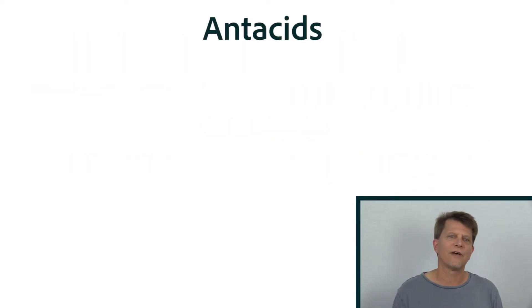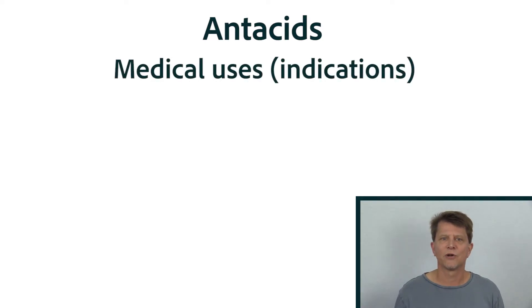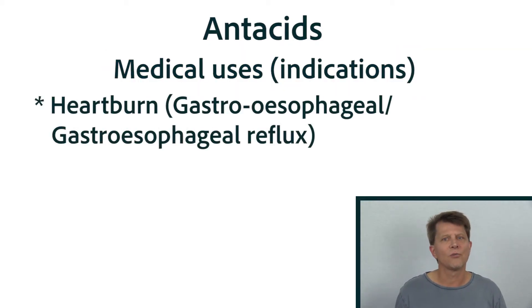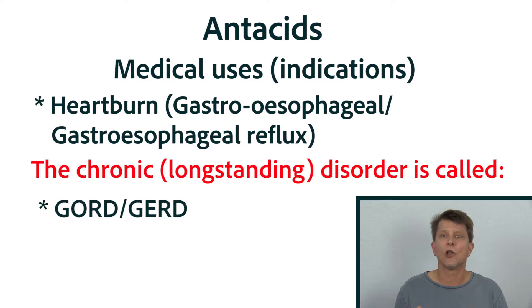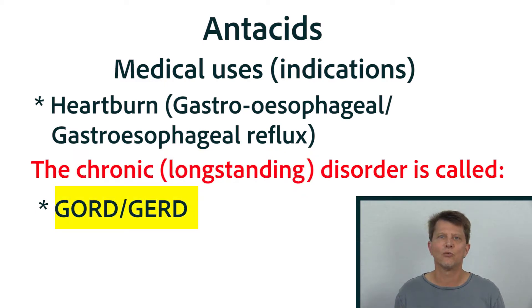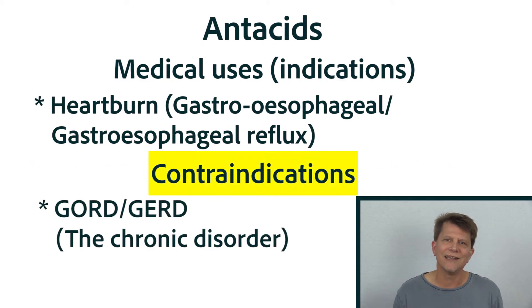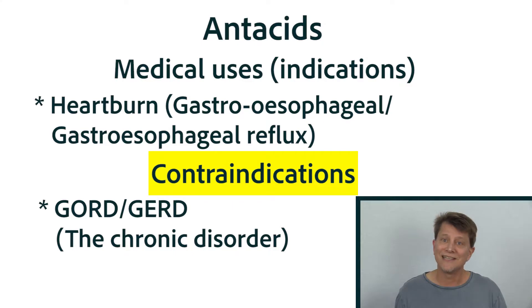One of the first things you're going to try to find out about any medication is what it treats — or in other words, what it is indicated for. Antacids help relieve heartburn. Heartburn is the simple term for gastroesophageal reflux. When that becomes a chronic, long-standing, ongoing disorder, it's called gastroesophageal reflux disease, abbreviated as GORD or GERD depending on how you spell esophagus. Importantly, antacids are not indicated in gastroesophageal reflux disease, for reasons we'll explain as we go along.